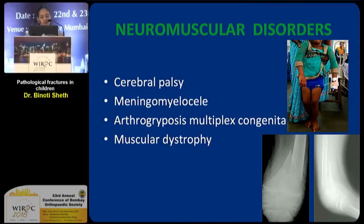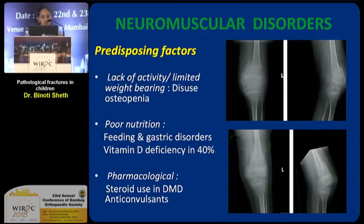We also have a set of conditions like neuromuscular disorders — cerebral palsy, meningomyelocele, arthrogryposis — where simple things like manipulation during physiotherapy sessions or during convulsion can fracture the bone. Because these children are less mobile, this lack of activity and limited weight bearing leads to disuse osteopenia. Many of them also have feeding and gastric disorders, so vitamin D deficiency is found in almost 40%. And many children, like in Duchenne's muscular dystrophy, are put on steroids, which weakens the bone, or are on anticonvulsants, which leads to interference with vitamin D metabolism and makes the bone weak.